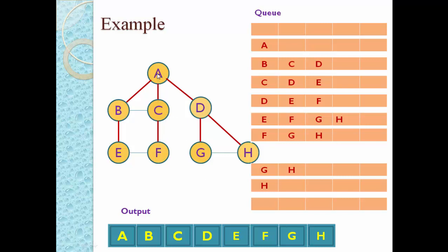We visited first A, then B, then C, then D, then E, then F, then G, then H. This traversal pattern is known as BFS. Using BFS we can visit all nodes of the graph and search any node from the graph. This is all about the BFS algorithm.